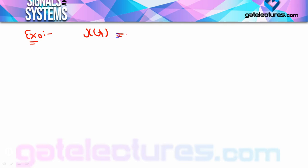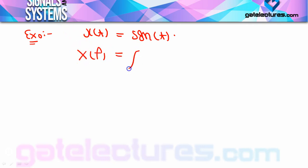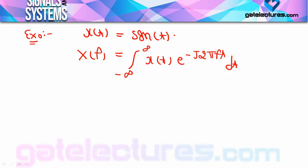Suppose I want to find the Fourier transform of signum(t), which we already calculated in the previous class using a trick — we put a → 0. Now I will find it again using the basic Fourier transform formula: ∫ x(t) e^(-j2πft) dt.